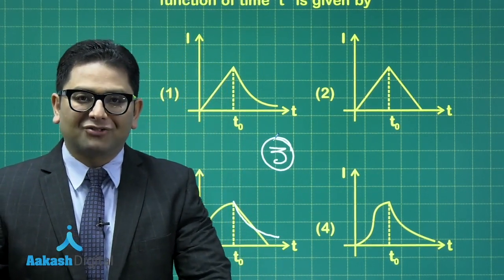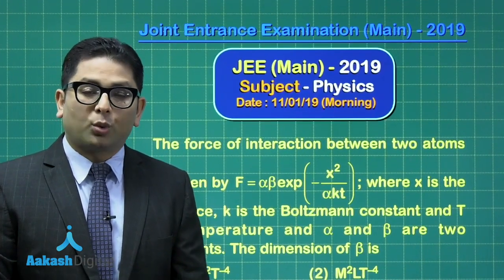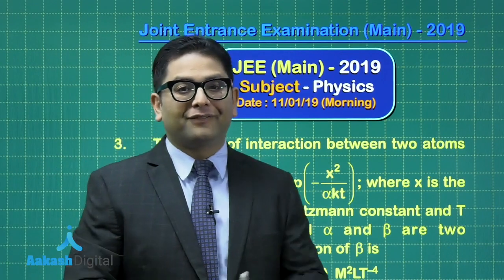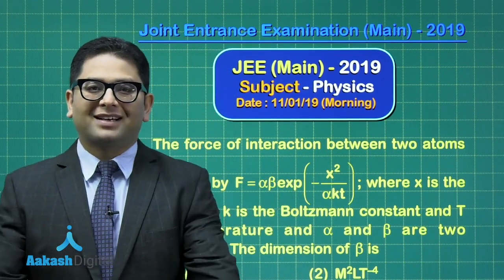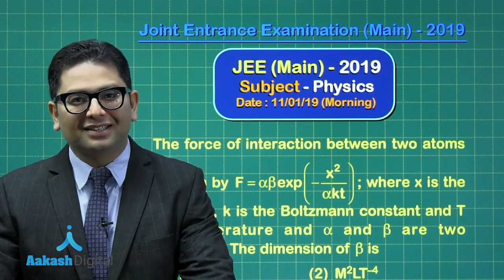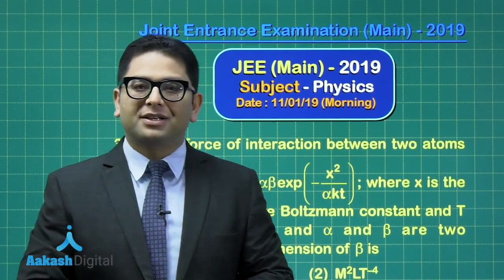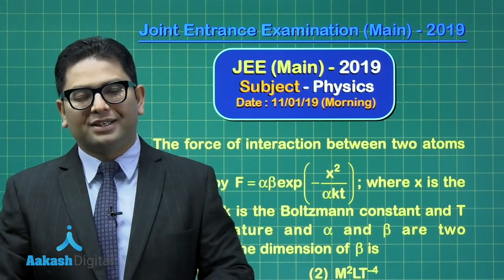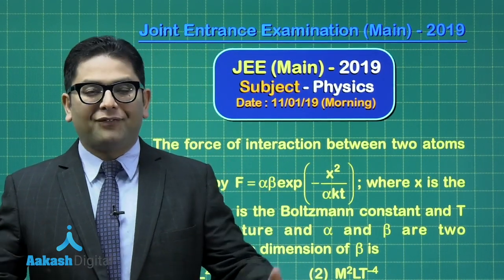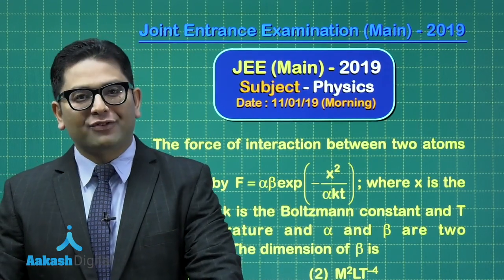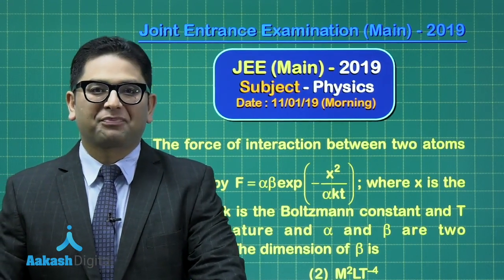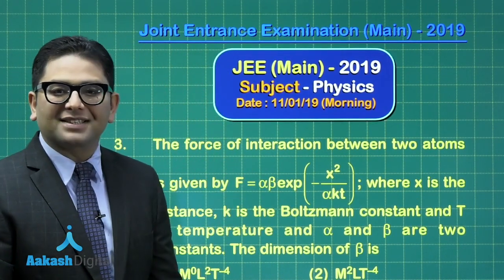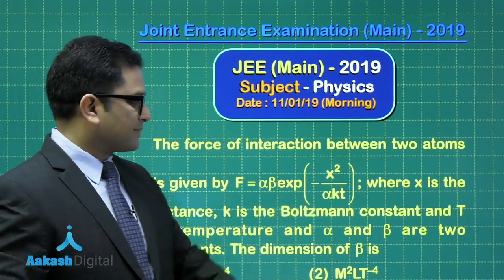Now let's move to question number three. Question number three, a straightforward question. And it has been set from the topic of units and measurement. You know, during the classes, we always say it with conviction that chapter number one, units and measurement is quite important. And questions being set has a very high probability from this topic. In fact, by giving this question, JEE has strengthened our conviction. So let's see, what is the question like?